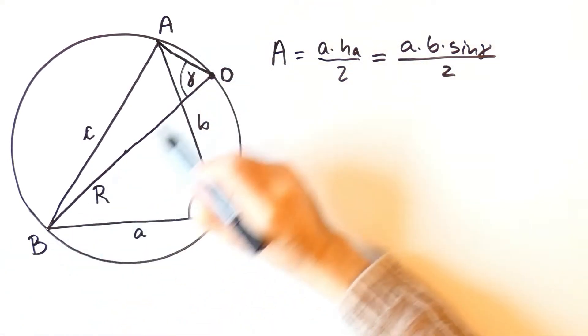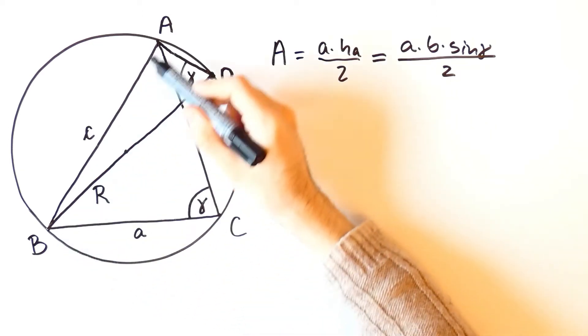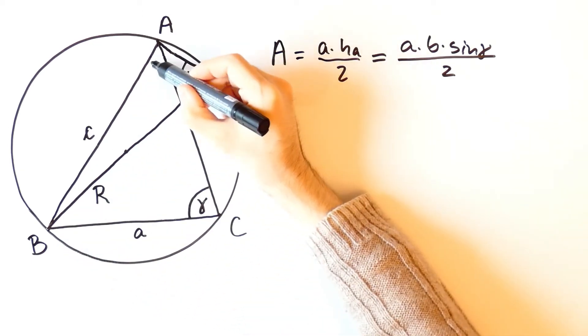And since BD is a diameter, then the angle BAD is equal to 90 degrees.